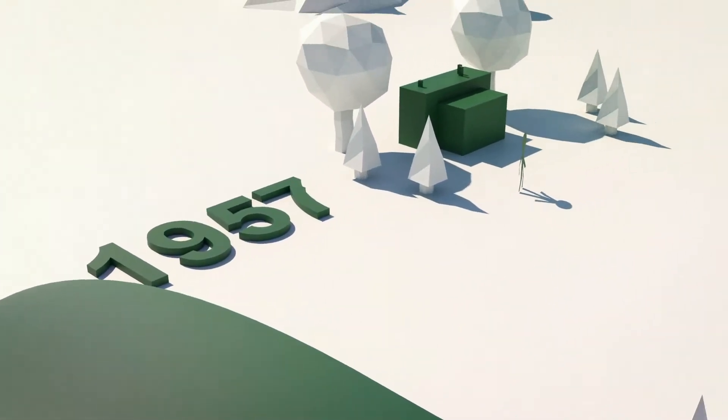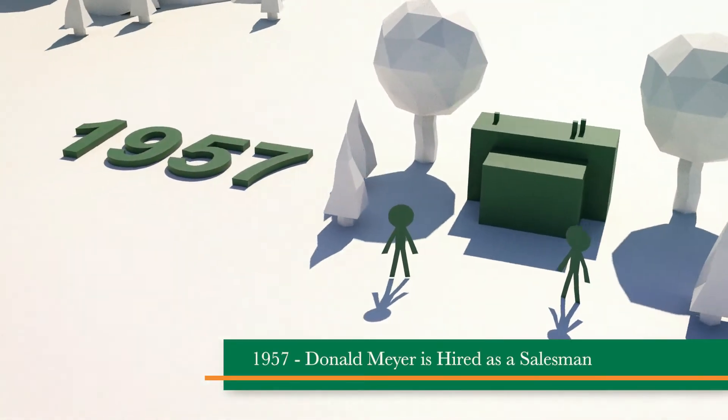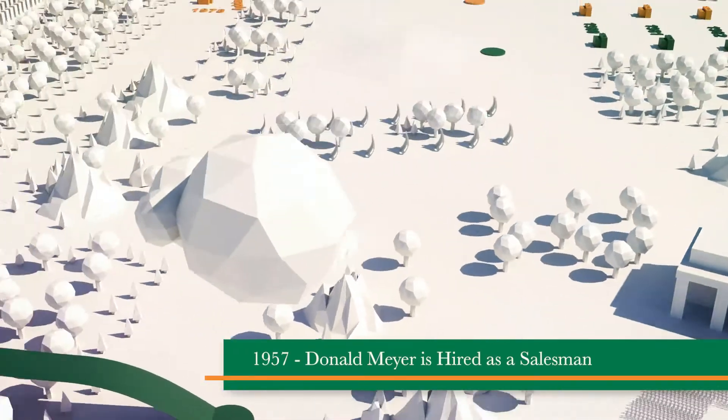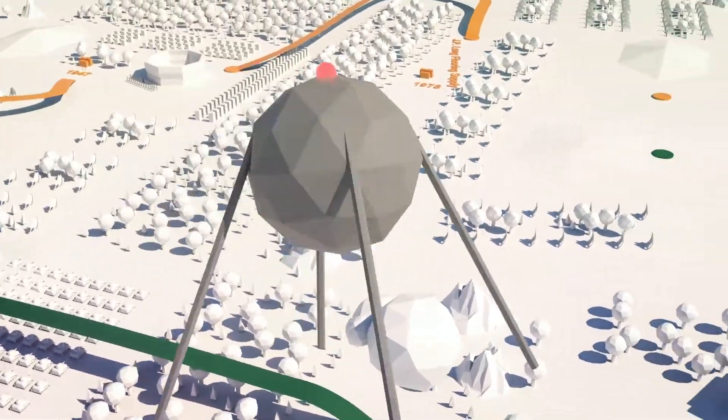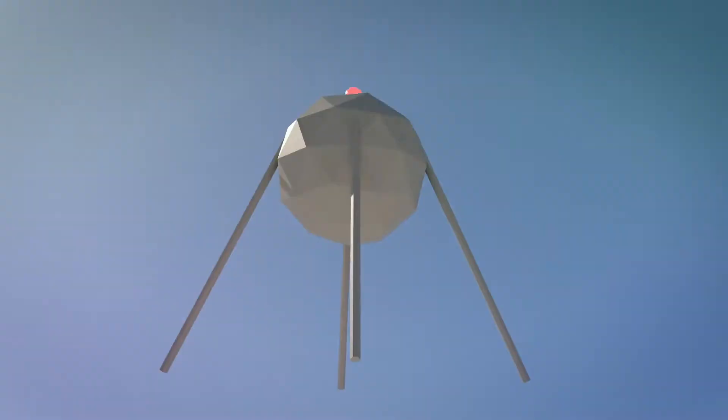In 1957, Donald Meyer is hired as a salesman and begins working for Bailey Lumber. High above the Earth, Sputnik 1 successfully enters orbit, as the USSR achieves Earth's first artificial satellite.